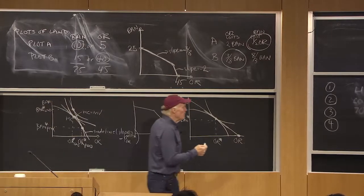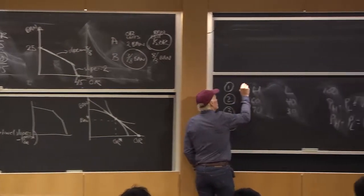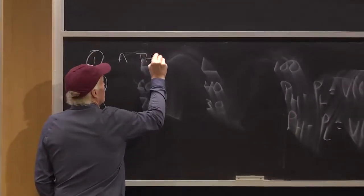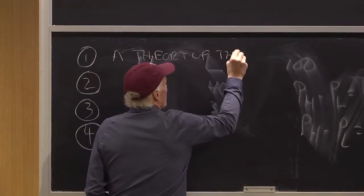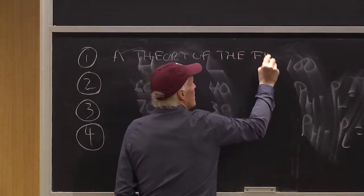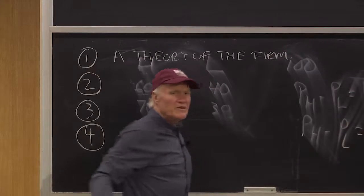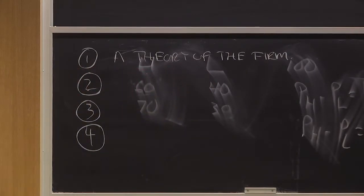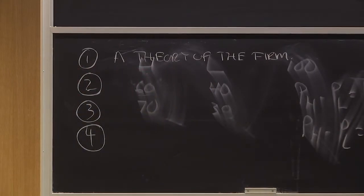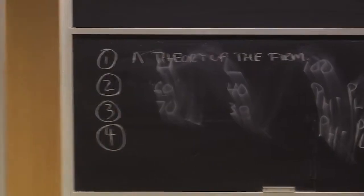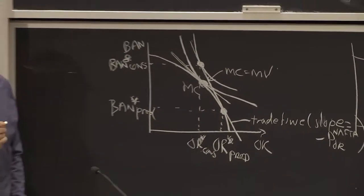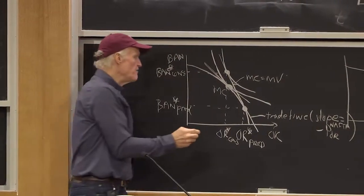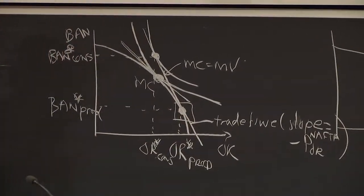So I would call that a theory of the firm. That is, we could, in this example, talk about a firm as owning this production process and a firm as choosing that point.